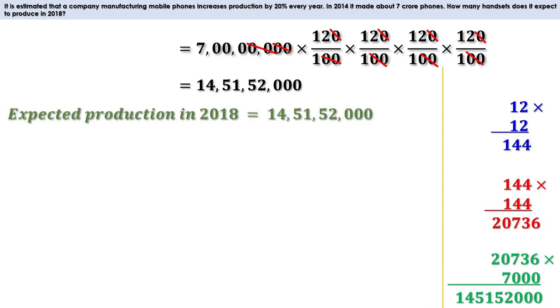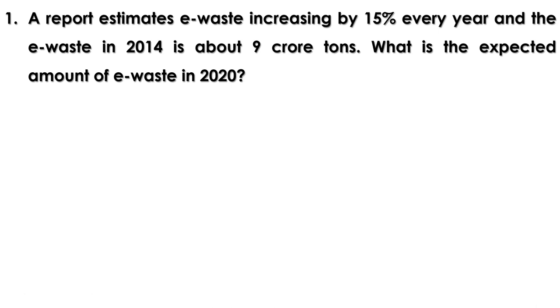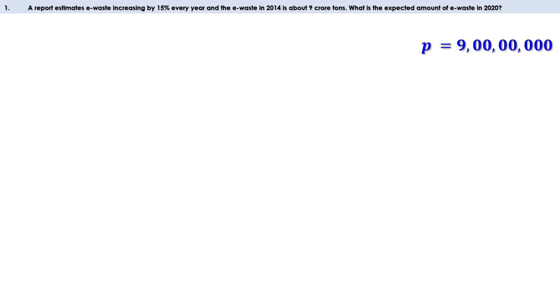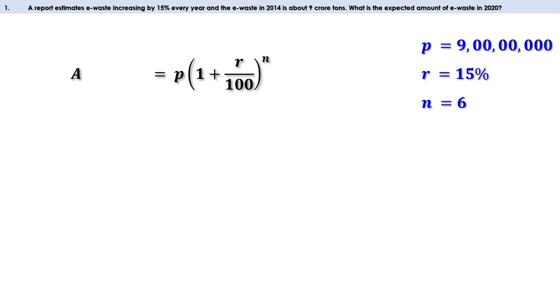Now let us do the problems on page 95. First problem: a report estimates e-waste increasing by 15% every year, and the e-waste in 2014 is about 9 crore tons. What is the expected amount of e-waste in 2020? E-waste in 2014 is 9 crore tons, so let us take P as 9 crore. It increases by 15% every year, that means R is 15%. We have to find the expected amount of e-waste in 2020, that means after 6 years, therefore n = 6.